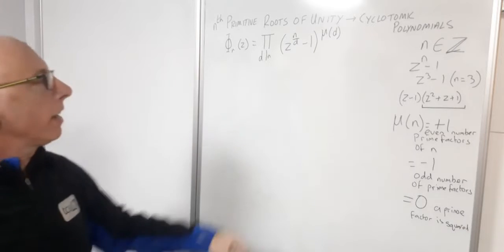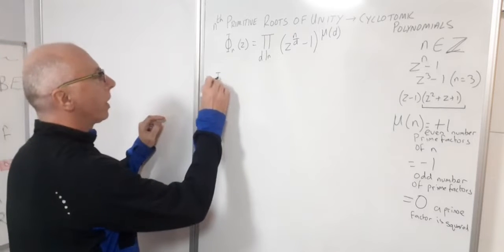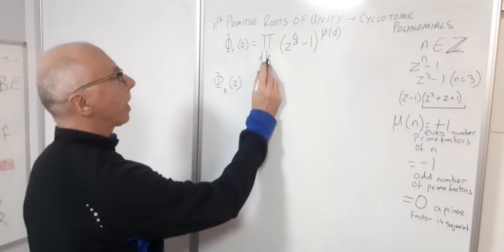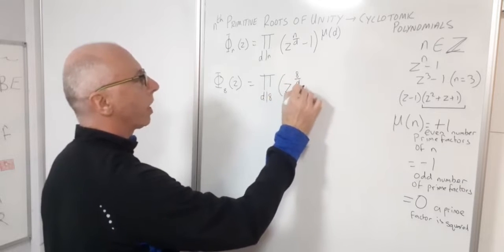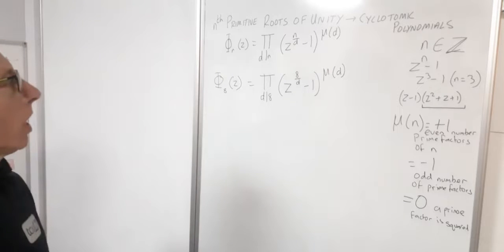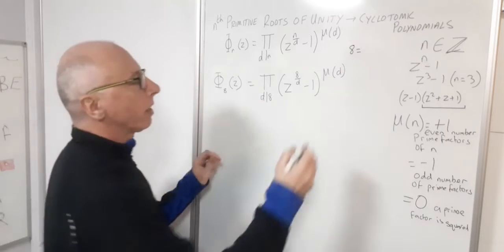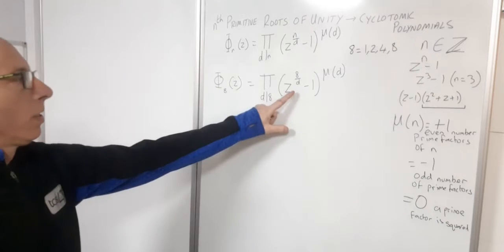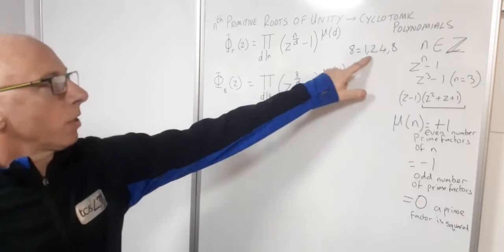Now let's find the cyclotomic polynomial phi_8(z). The divisors of 8 are 1, 2, 4, and 8. We expand the product using each divisor: when d=1 we get (z^8 minus 1)^mu(1); when d=2 we get (z^4 minus 1)^mu(2); when d=4 we get (z^2 minus 1)^mu(4); and when d=8 we get (z^1 minus 1)^mu(8).